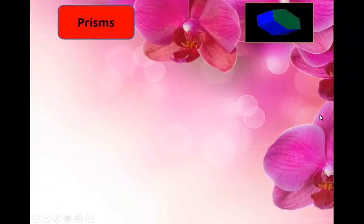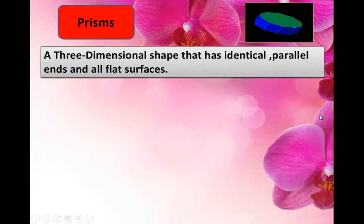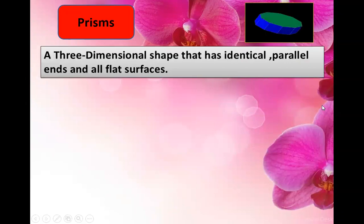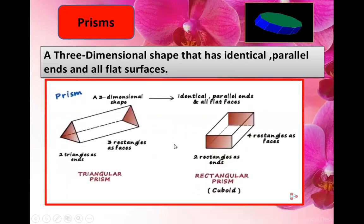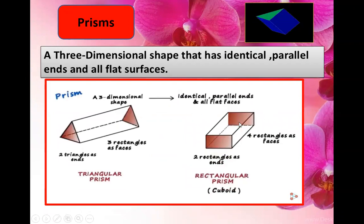Prisms. What is a prism? A three-dimensional shape that has identical parallel ends and all flat surfaces. Here you can see a three-dimensional shape with identical parallel ends and all flat faces.